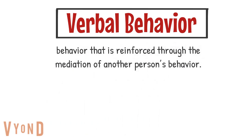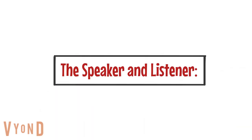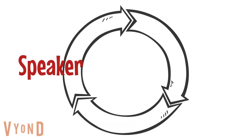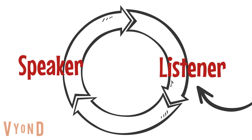Skinner defines verbal behavior as behavior that is reinforced through the mediation of another person's behavior, and it involves a social interaction between a speaker and a listener. In this interaction, the speaker gains access to reinforcement and controls their environment through the behavior of the listener. Skinner's verbal behavior is primarily concerned with the behavior of the speaker, and the listener must learn how to reinforce the speaker's verbal behavior — listeners are taught to respond to words and interact with speakers.